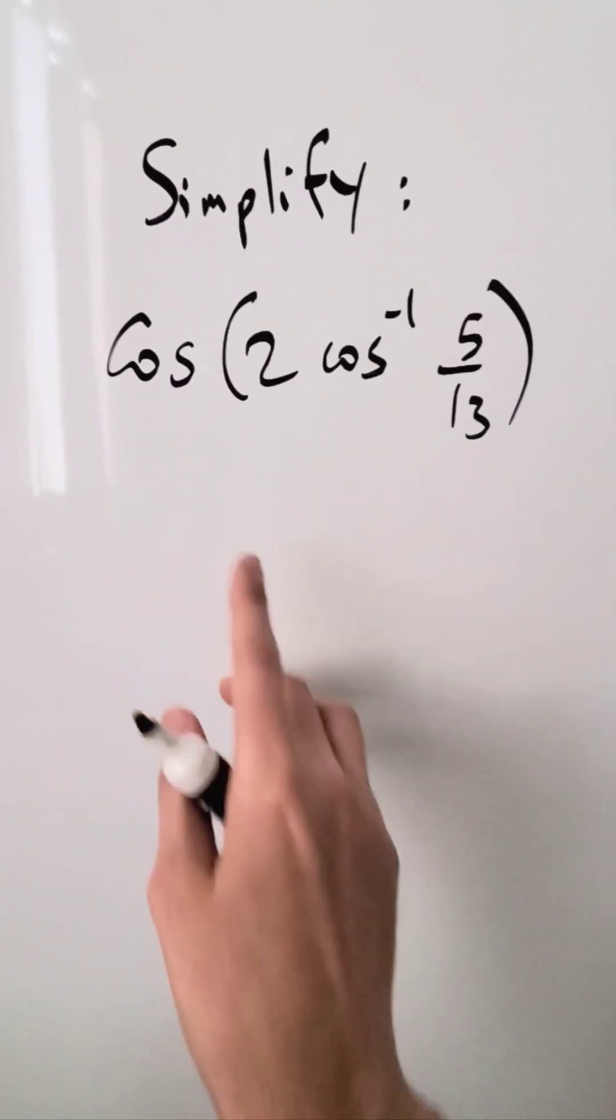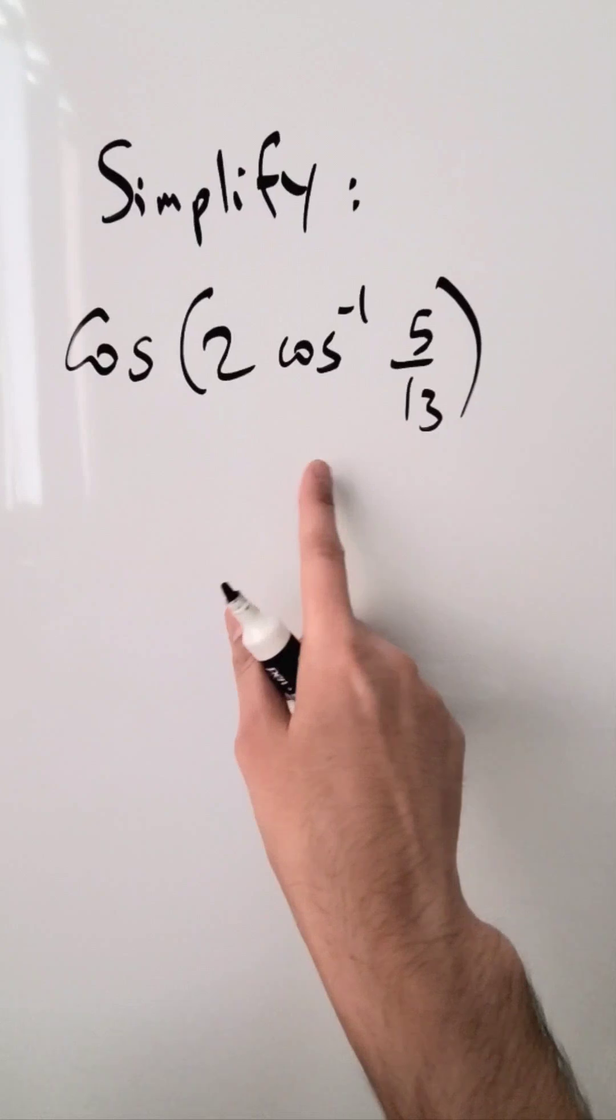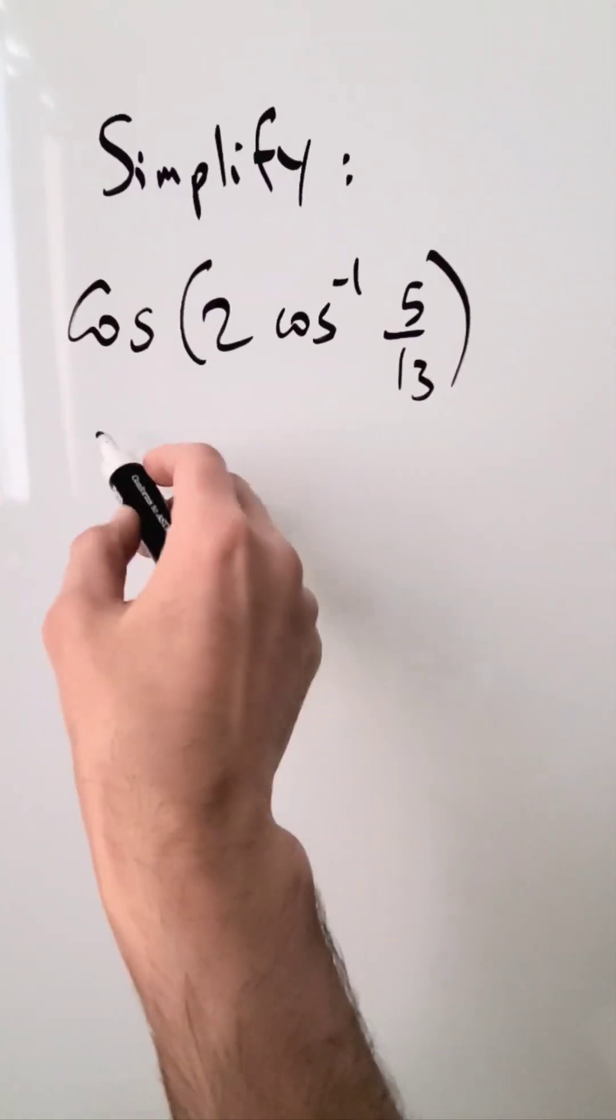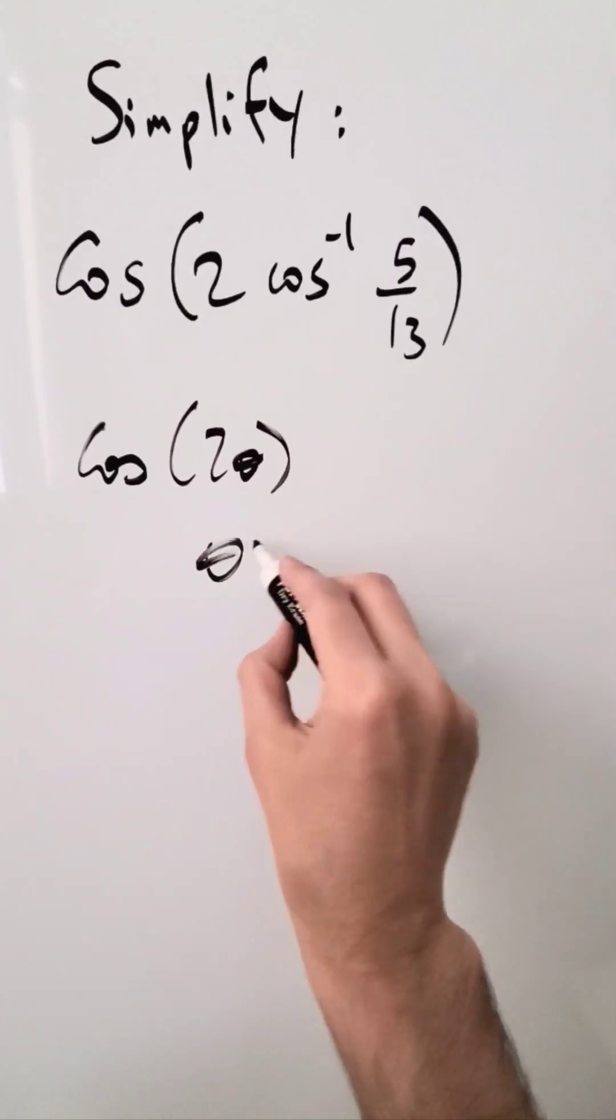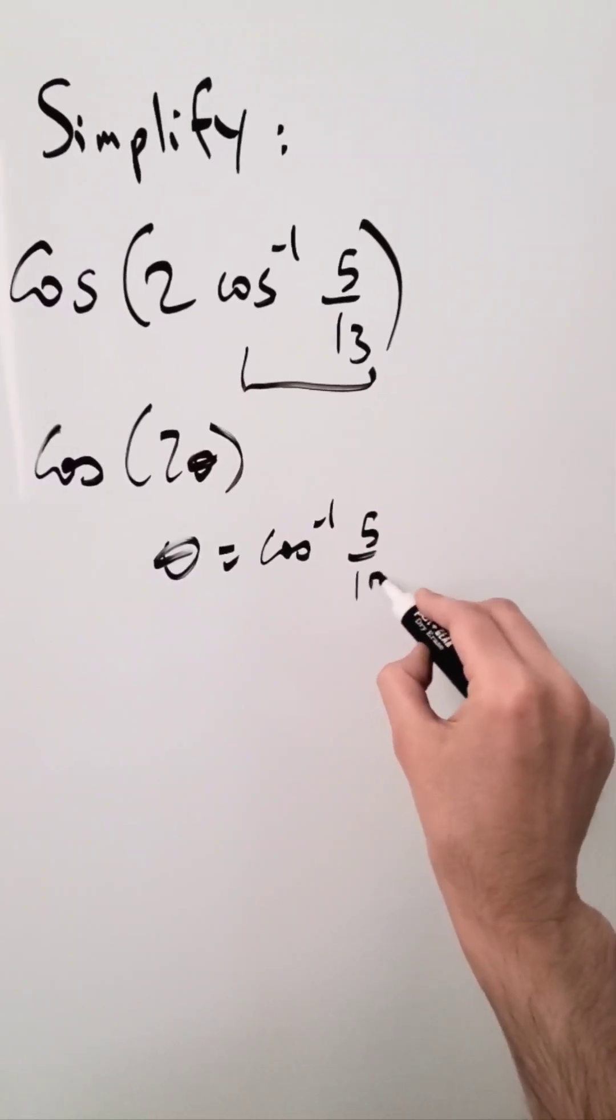Let's simplify and evaluate this expression: cosine of 2 inverse cosine 5 over 13, or you can say cosine of 2 arc cosine 5 over 13. What we are really evaluating is cosine of 2 theta, where theta is being represented by this part right here, the inverse cosine or the arc cosine 5 over 13.